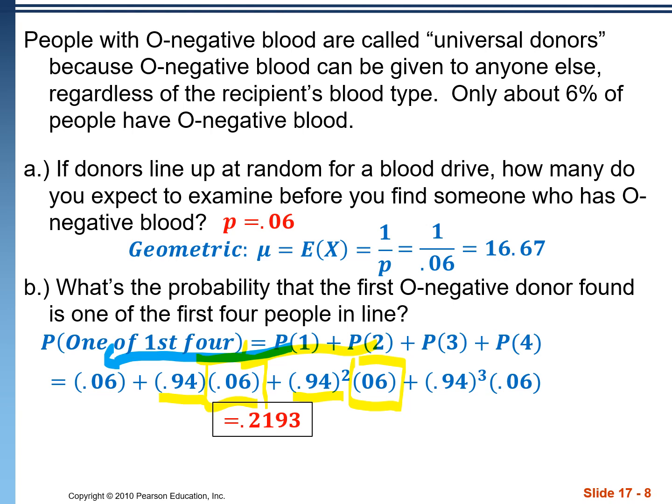There's a calculator function that does this. It's called geomcdf or geomitcdf, depending on your calculator. It's in the same menu that you find your normal cdf. And also note that there's both the cdf and the pdf function for this and the binomials.